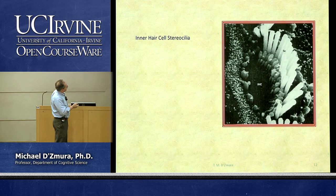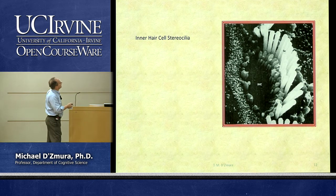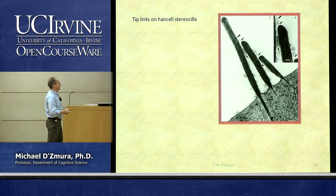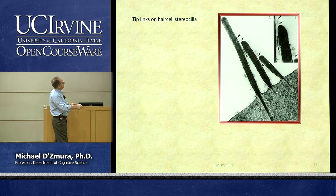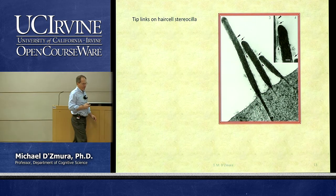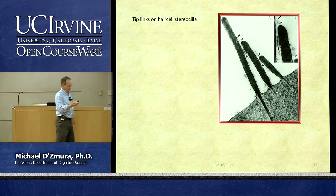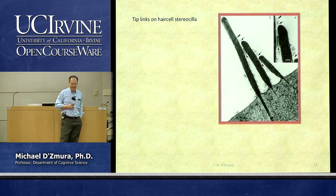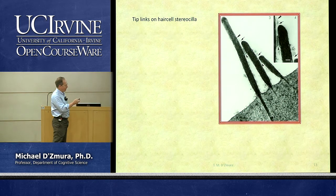The stereocilia come in three rows — tall, medium, and short — connected to one another by tip links. These tip links are fibers joining the tip of one cilium to the cilium of next greater size. The tip links are very important in controlling the function of the inner hair cells.